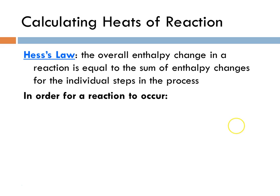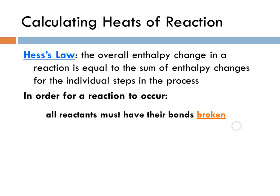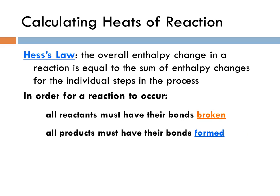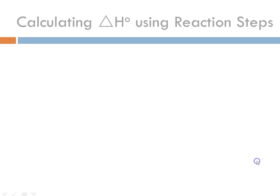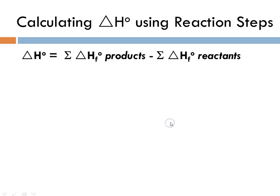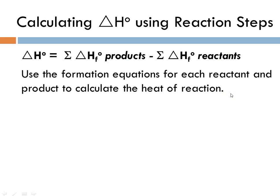In order for a reaction to occur, we remember that all of the reactants must have their bonds broken, and then all of the products must have their bonds formed. We're going to be calculating the delta H of reaction using individual reaction steps. Hess's law tells us that delta H is the sum of the heats of formation of the products minus the sum of the heats of formation of the reactants.